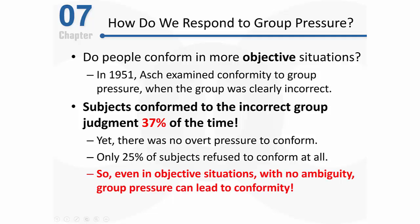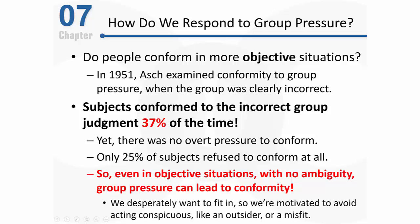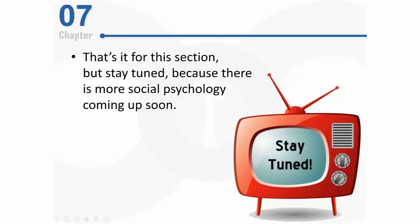The take-home message from Asch's research: even in objective situations with no ambiguity, group pressure can lead to significant conformity. As social animals, we desperately want to fit in with the group and avoid acting like an outsider or misfit — and that's at least one reason we see such conformity among human beings. That's it for this section, but stay tuned for more social psychology coming up soon.